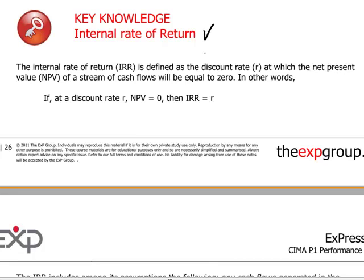In testing investment acceptability from a financial point of view, the internal rate of return is a discounting method where we operate on a set of cash flows relative to the investment amount and determine at what discount rate — the IRR — the present value of the future cash flows will exactly equal the initial investment amount. In other words, at what discount rate is the NPV going to be equal to zero? That break-even rate is by definition our internal rate of return.